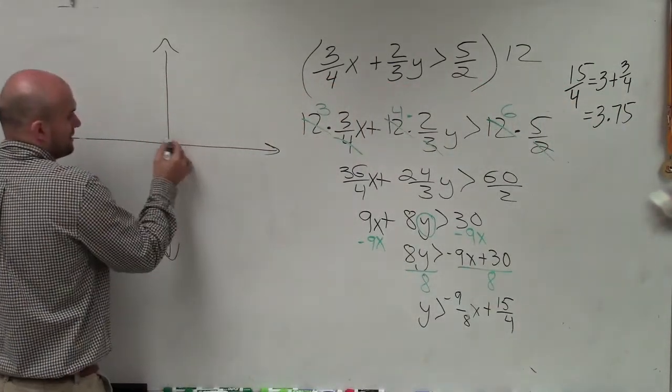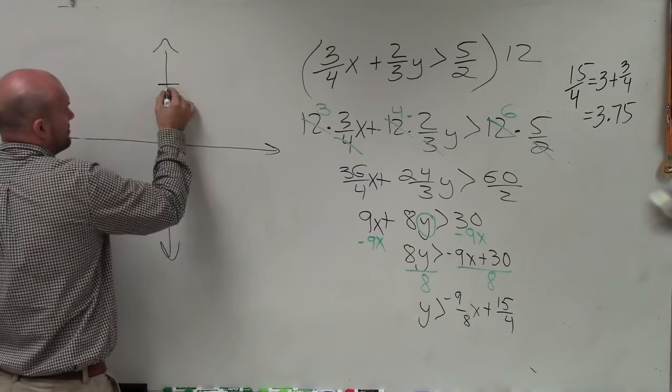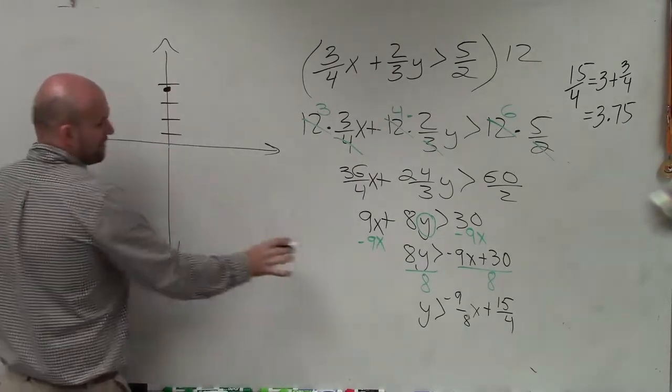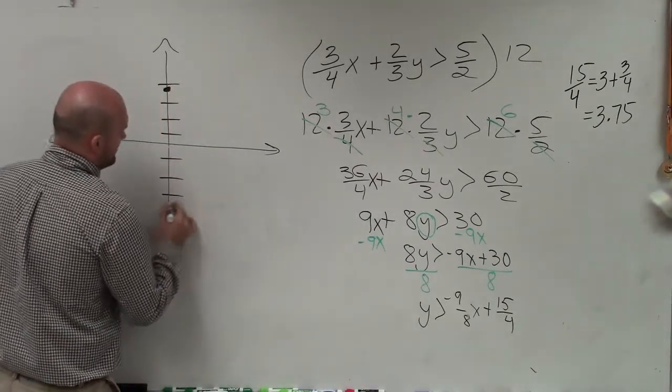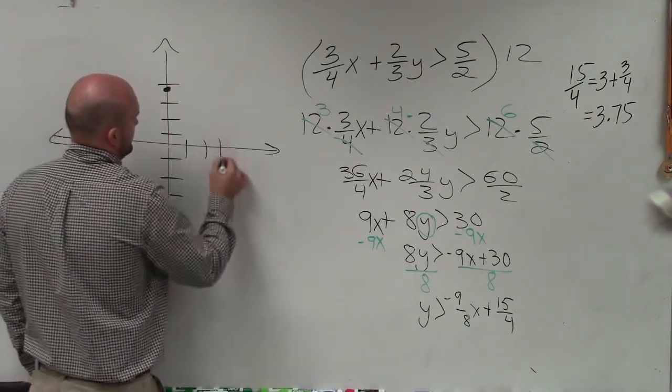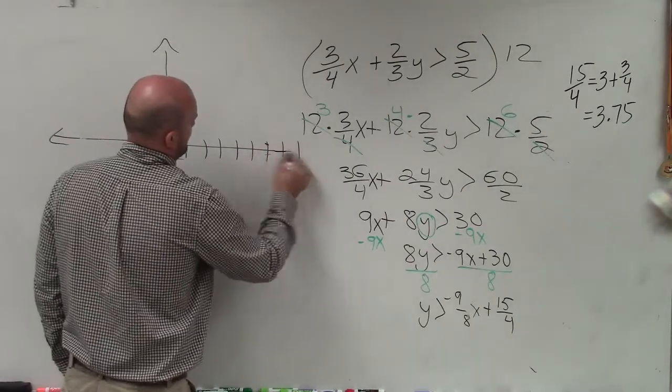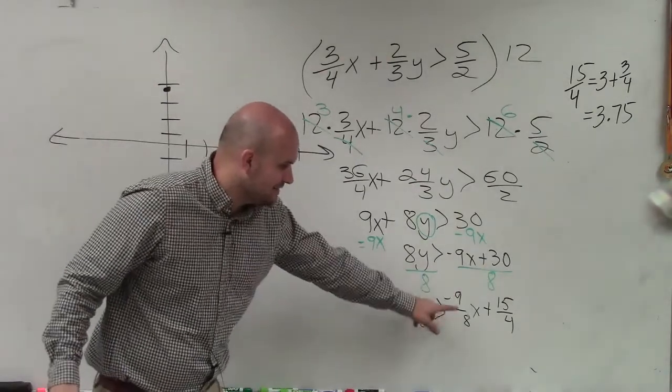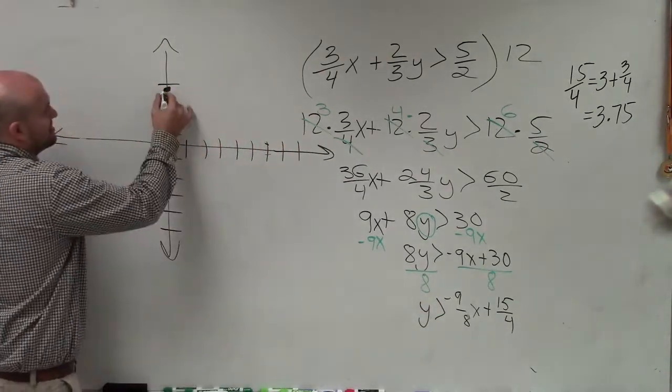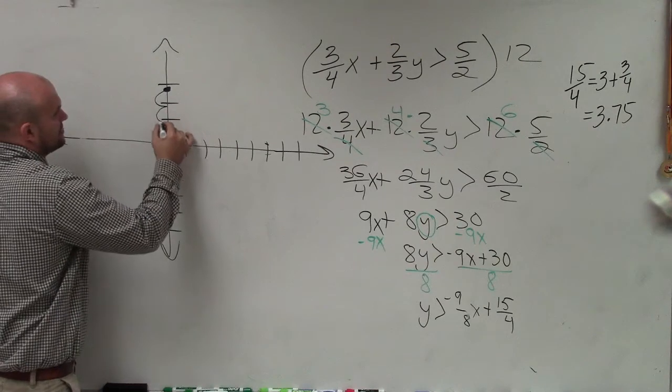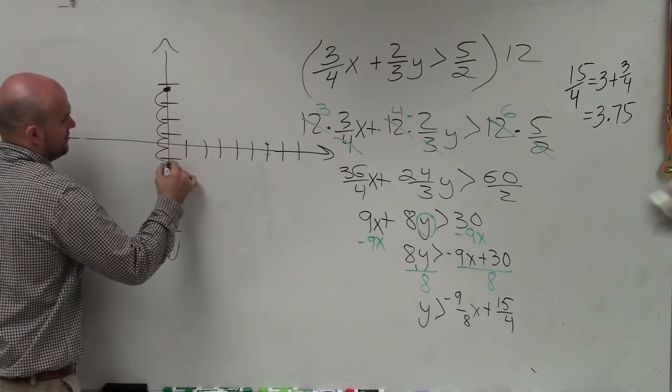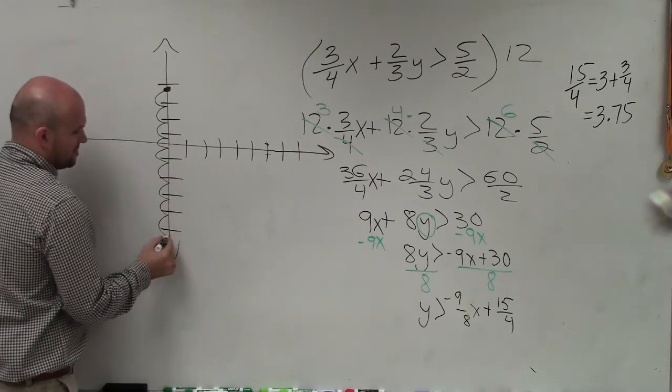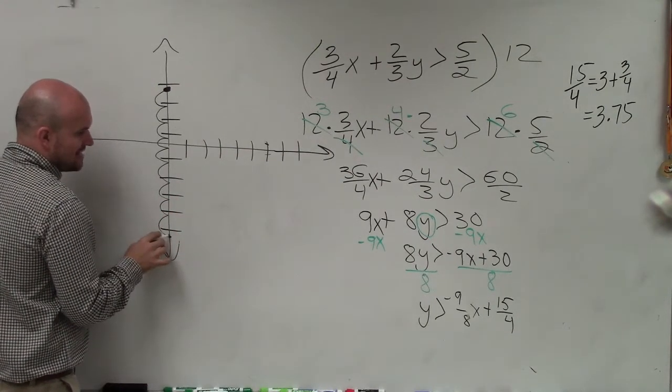So I'm graphing my y-intercept, so it's 1, 2, 3, 4. So 3.75 is going to be somewhere right there. So when I want to graph my slope of negative 9 over 8, remember all we're doing is we're just going down 9 units over 8 units. So I'm just going to kind of go down 1, 2, 3, 4, 5, 6, 7, 8, 9. So this is going to be .25 less than this last tick mark.